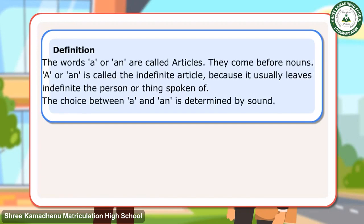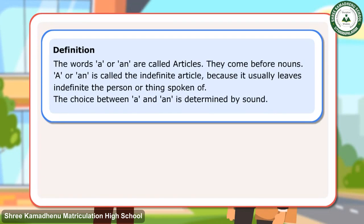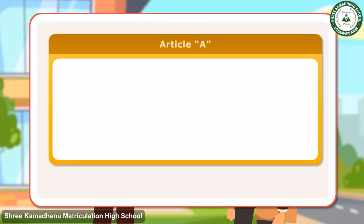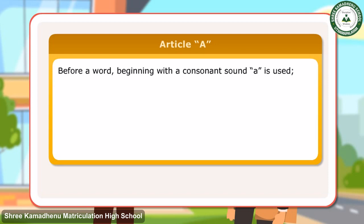The words A or AN are called articles — they come before nouns. A or AN is called the indefinite article because it usually leaves indefinite the person or thing spoken of. The choice between A and AN is determined by sound. Usage: Article A — before a word beginning with a consonant sound, A is used.